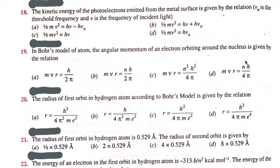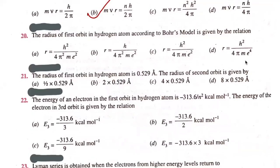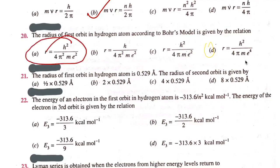In Bohr's model of the atom, nineteenth question: The angular momentum of an electron orbiting around the nucleus is given by a formula. The radius of orbit in a hydrogen atom according to Bohr's model is given by a relation. The formula involves h squared by 4 pi squared. Option A is correct.